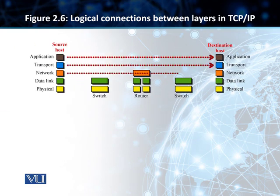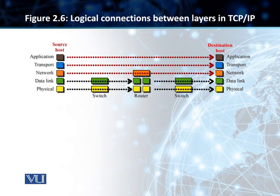You can see that there is a logical connection between the top layers — between the application and the transport layer at the source and the destination. So, there is a logical connection from the application layer of the source to the application layer of the destination, and from the transport layer of the source to the transport layer of the destination. Similarly, you have got a logical connection of the network layer to the opposite end as well.